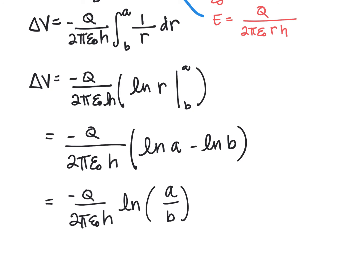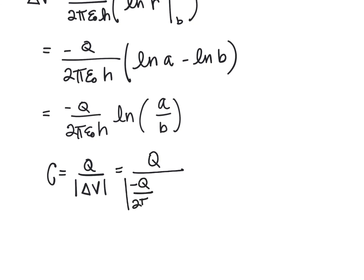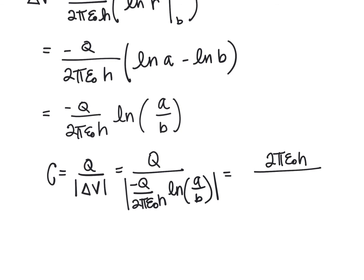Now that we have an expression for the potential difference, we substitute its magnitude into our equation for capacitance. Capacitance is charge divided by the absolute value of the potential difference. Substituting, we get q divided by the absolute value of negative q over 2π epsilon naught h times ln(a/b), which gives us the capacitance C = 2π epsilon naught h over ln(a/b).